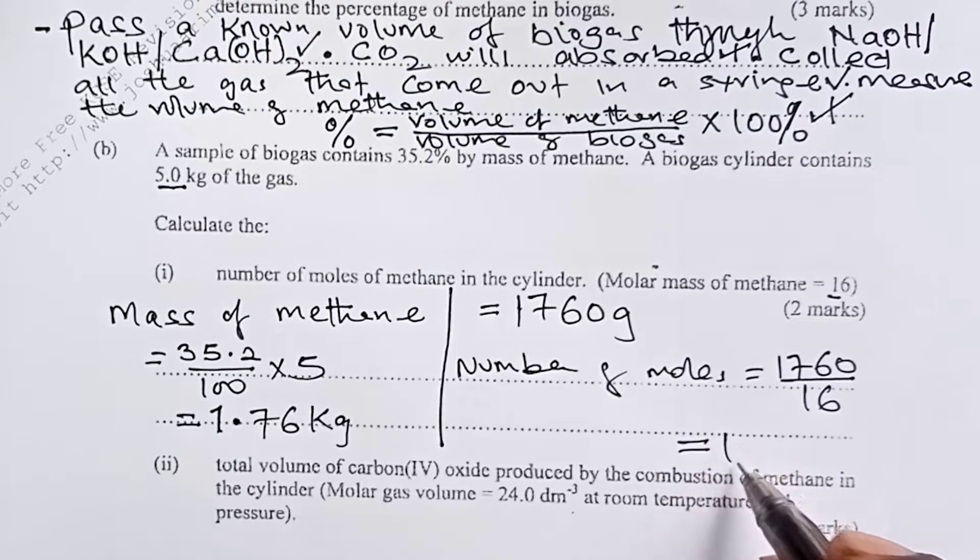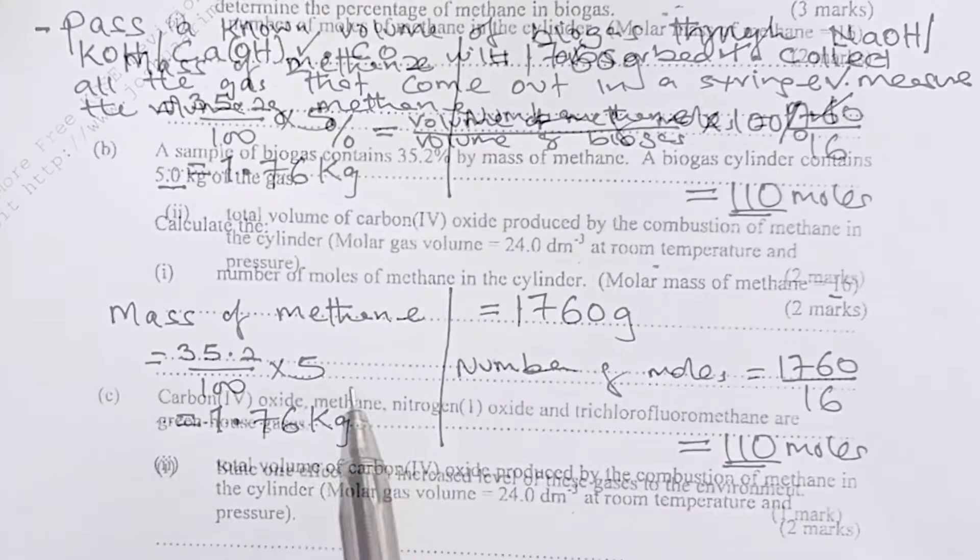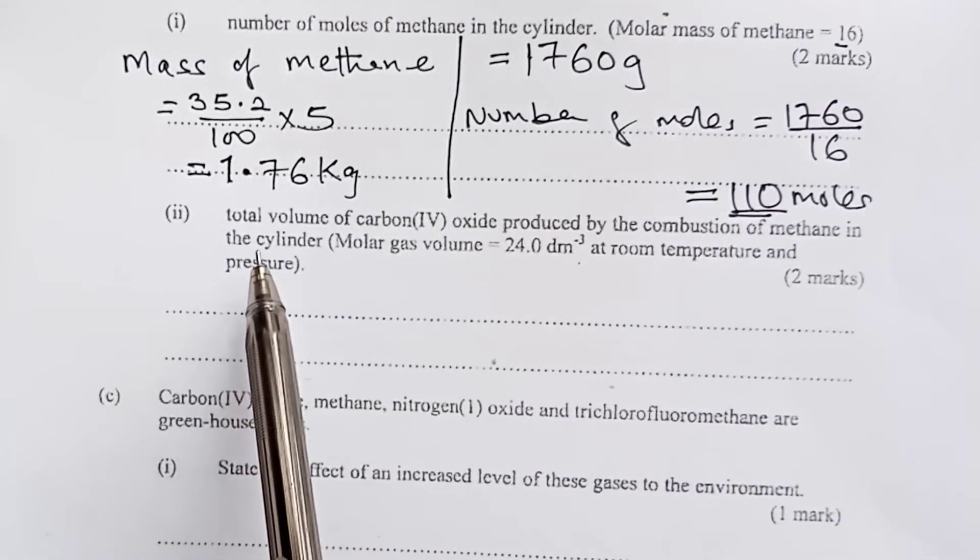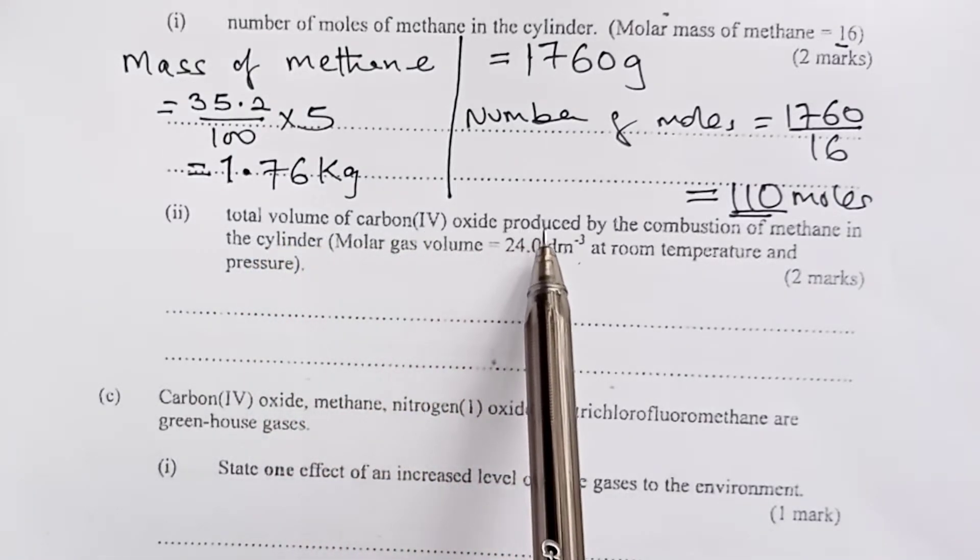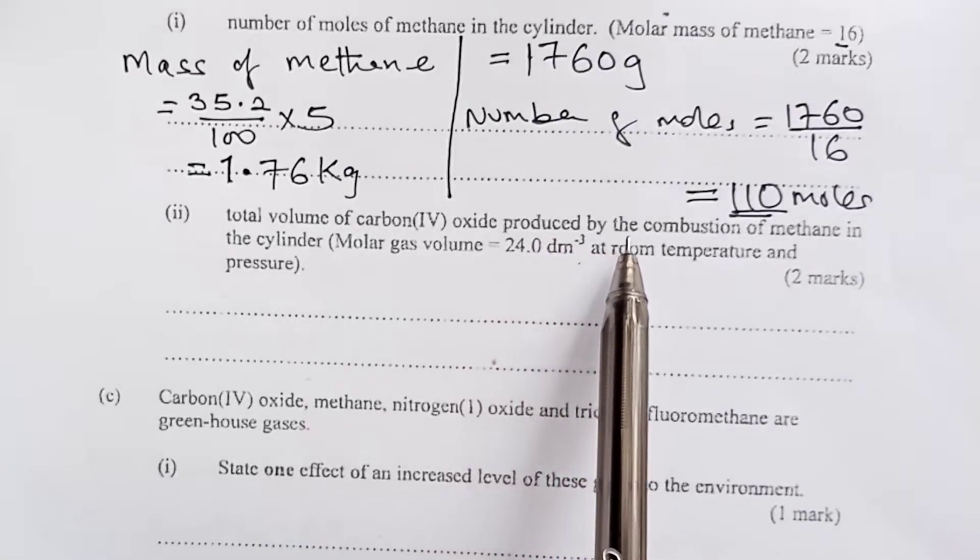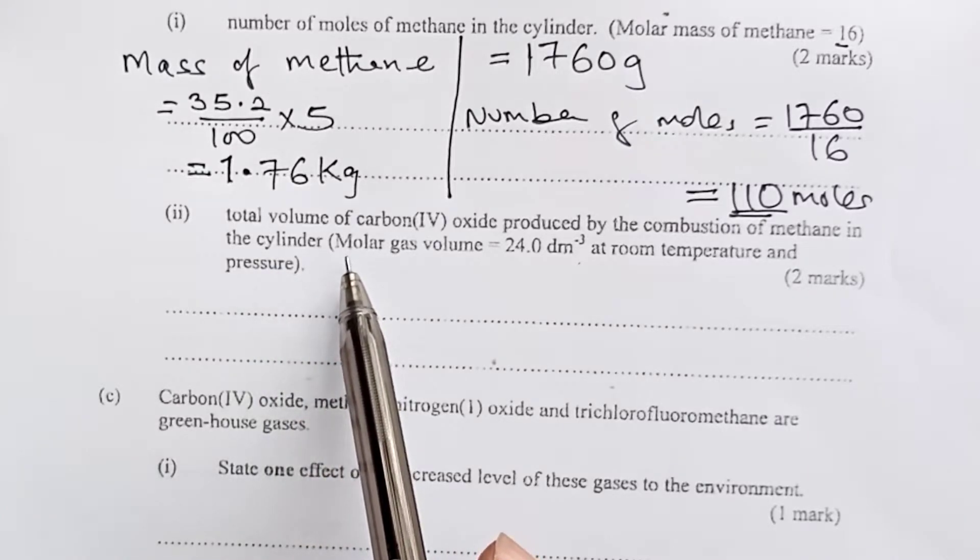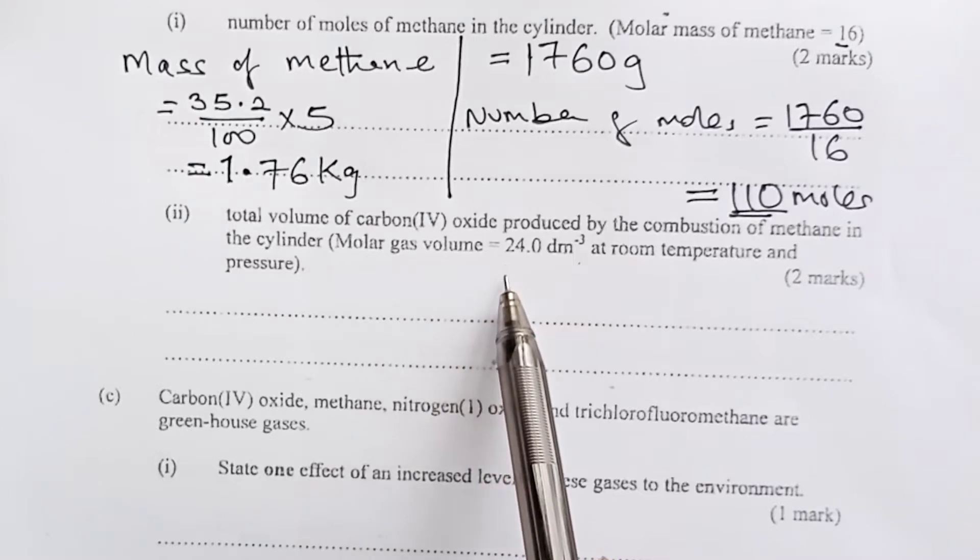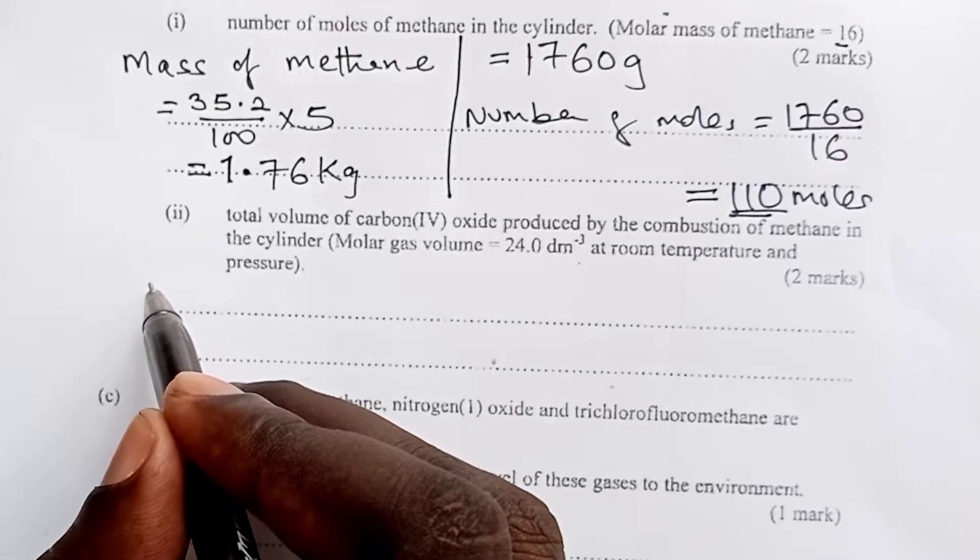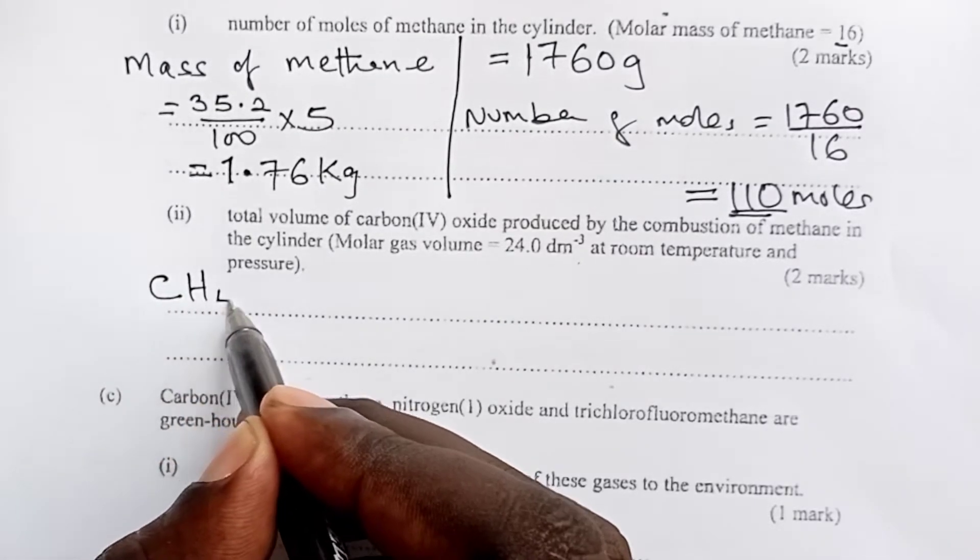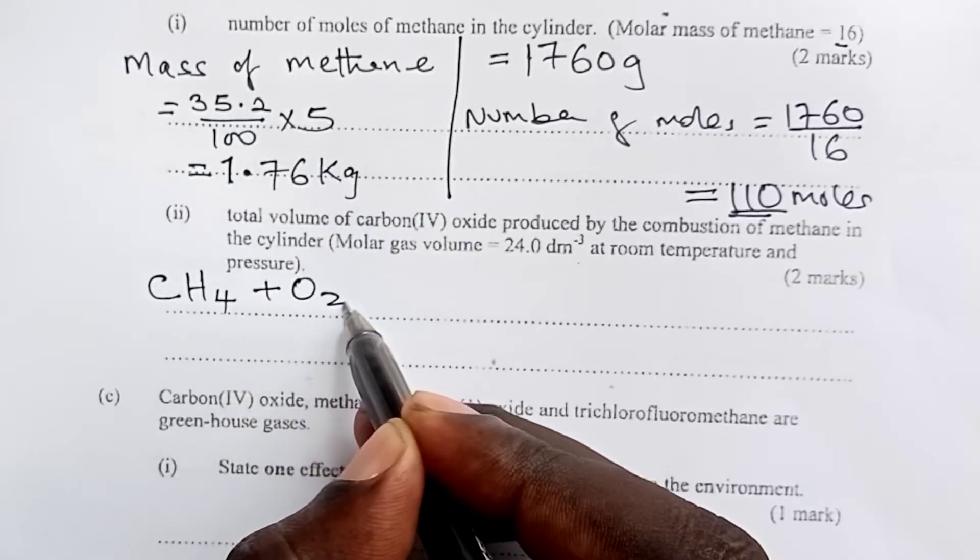Next question is asking us to calculate the total volume of carbon-4 oxide produced by the combustion of methane in the cylinder. We have been told that molar gas volume at RTP is 24 liters. So for us to answer this question, we first need an equation for combustion of methane.